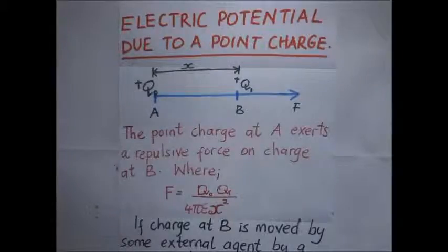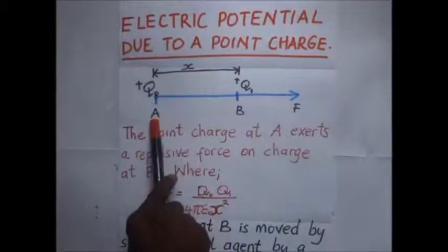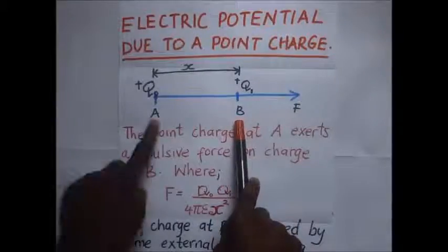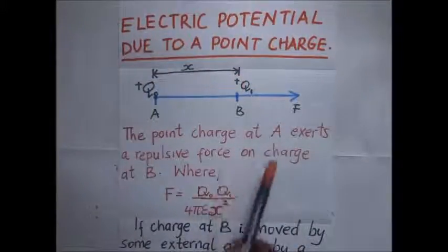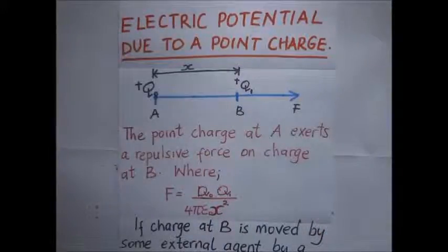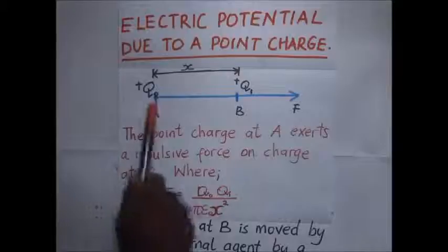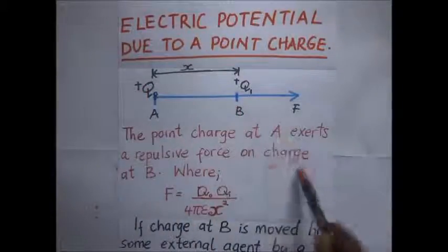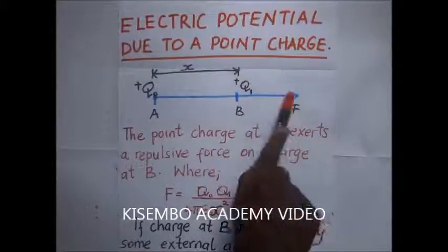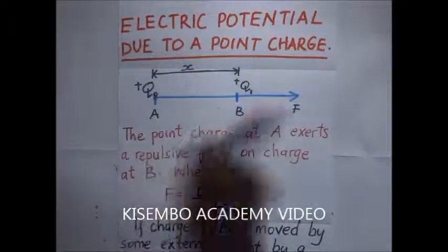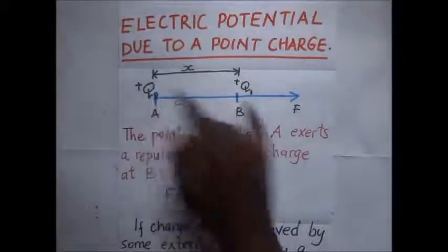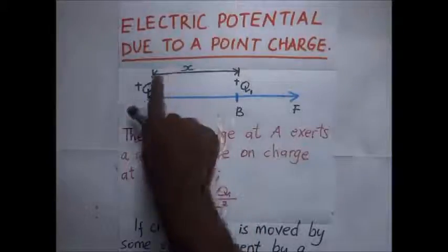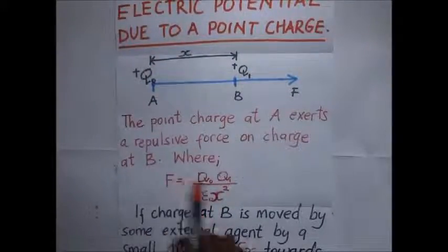Now let's look at the electric potential due to a point charge. We have charge at position x₀, charge at point A at position x₁, and point B. These two points A and B are separated by distance x. The point charge at A, which is Q, exerts a repulsive force on charge B, so that force arrow points away. The repulsive force is directly proportional to the product of the two charges and inversely proportional to the square of their separation x — from Coulomb's law.